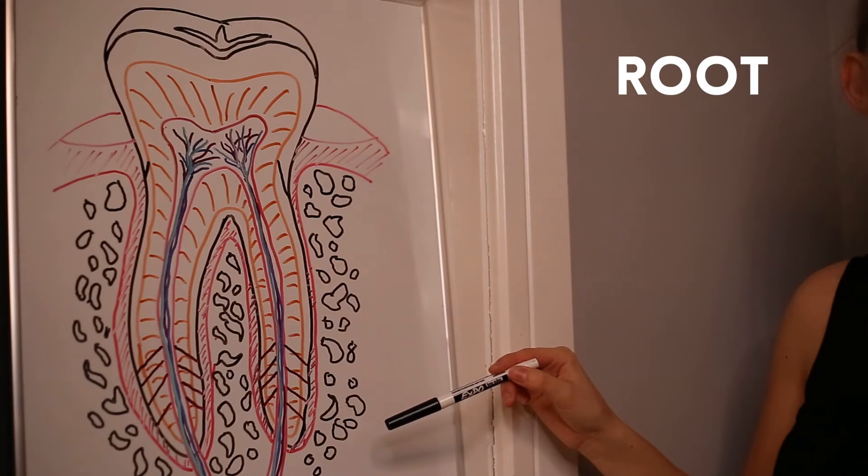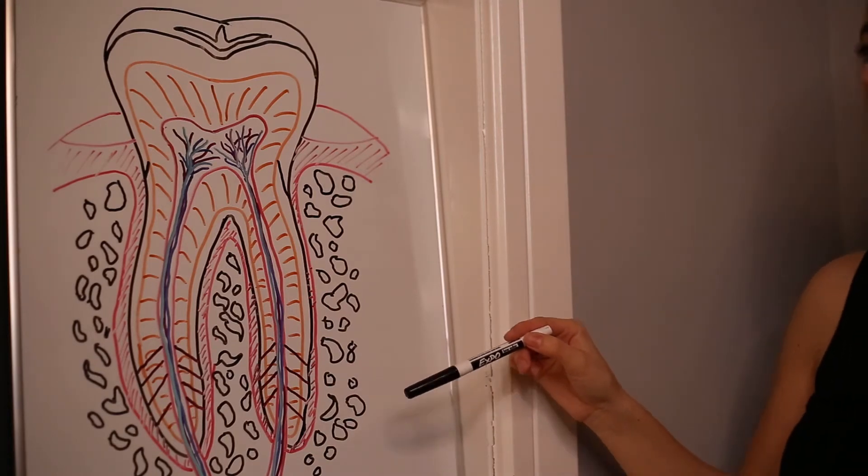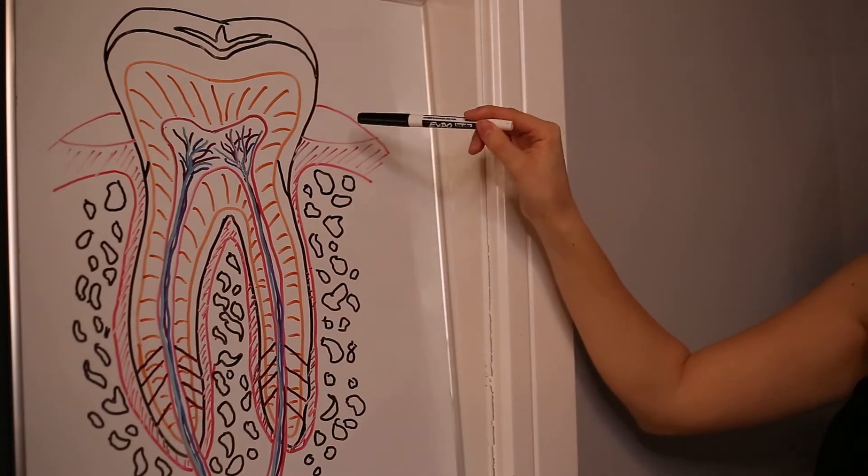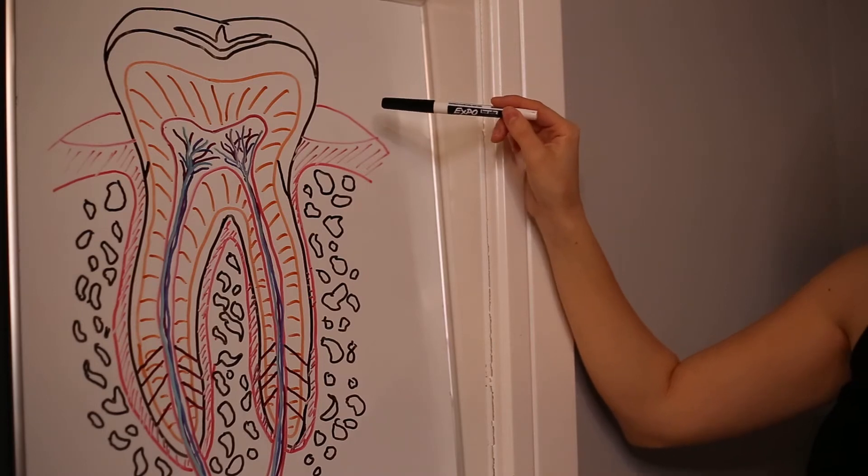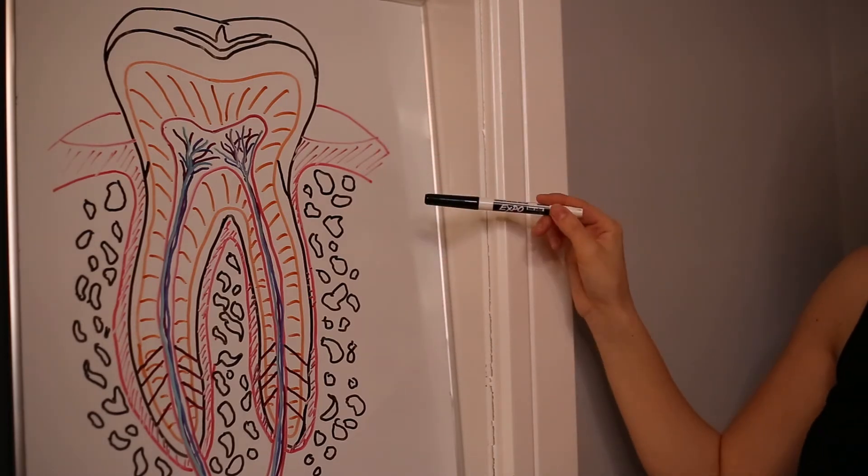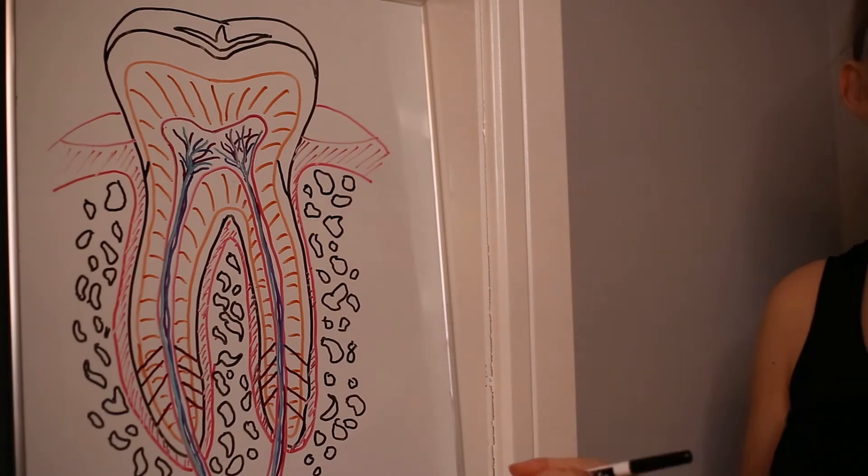As you can see, which a lot of people don't know, it's kind of like an iceberg in our mouth. We have only about a third-ish of the tooth is actually exposed above the gum line for us to see. The other two thirds going down are actually what's in the bone, embedded in the bone and that's the root of the tooth.